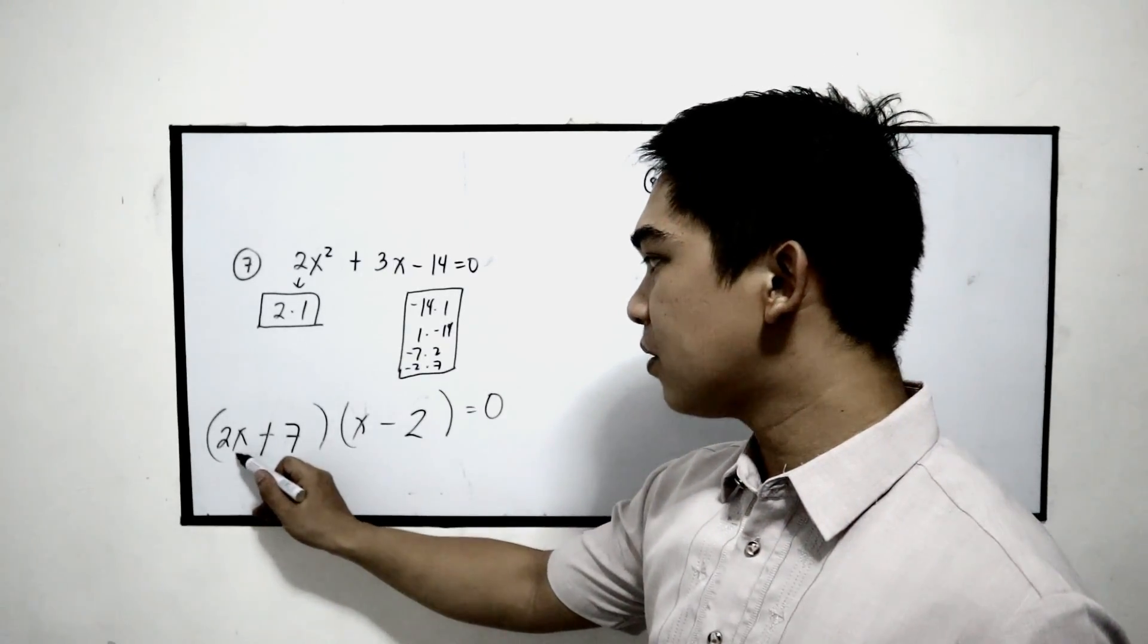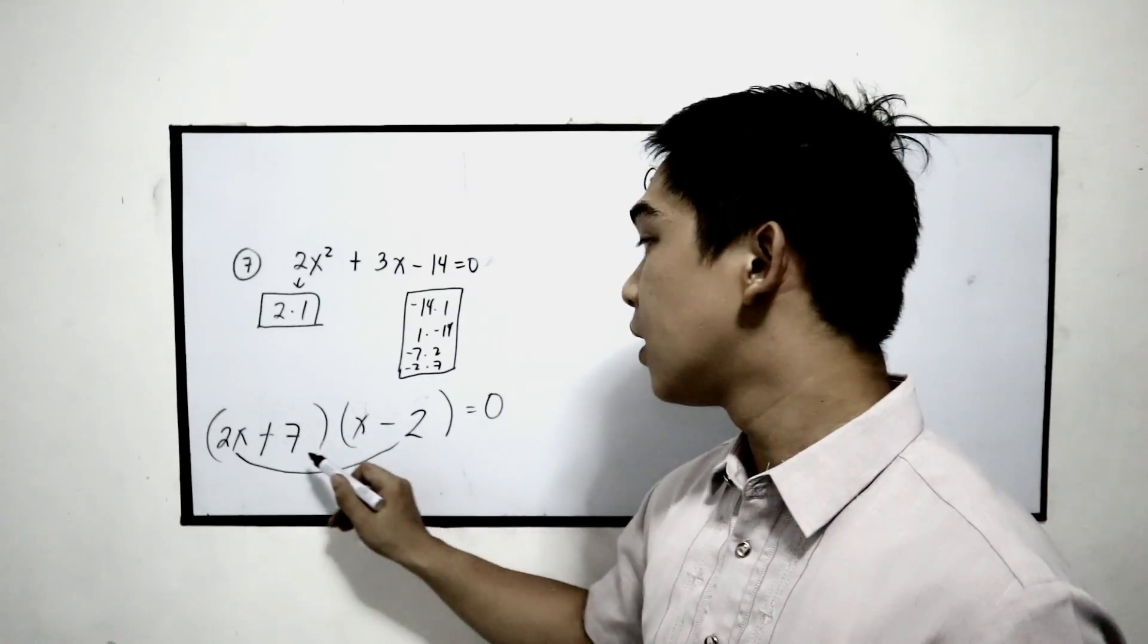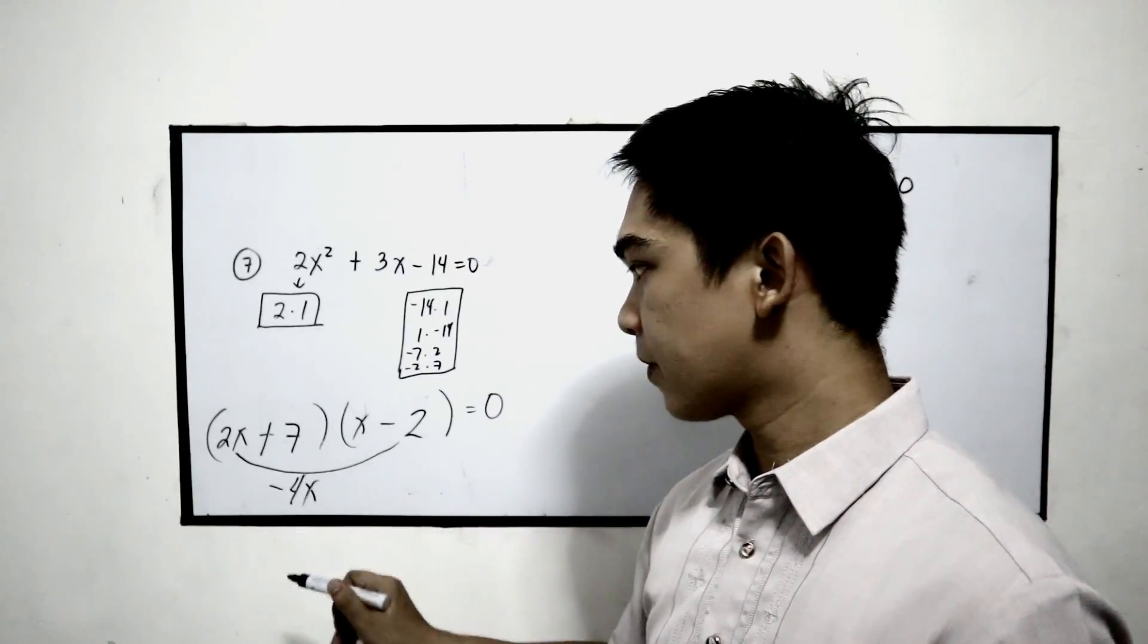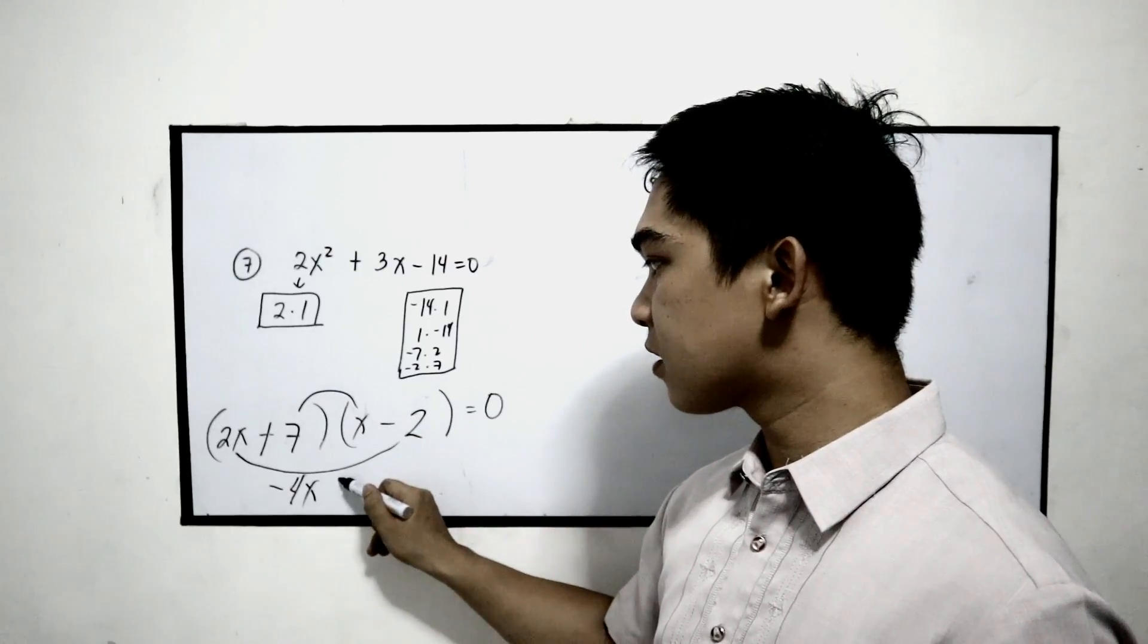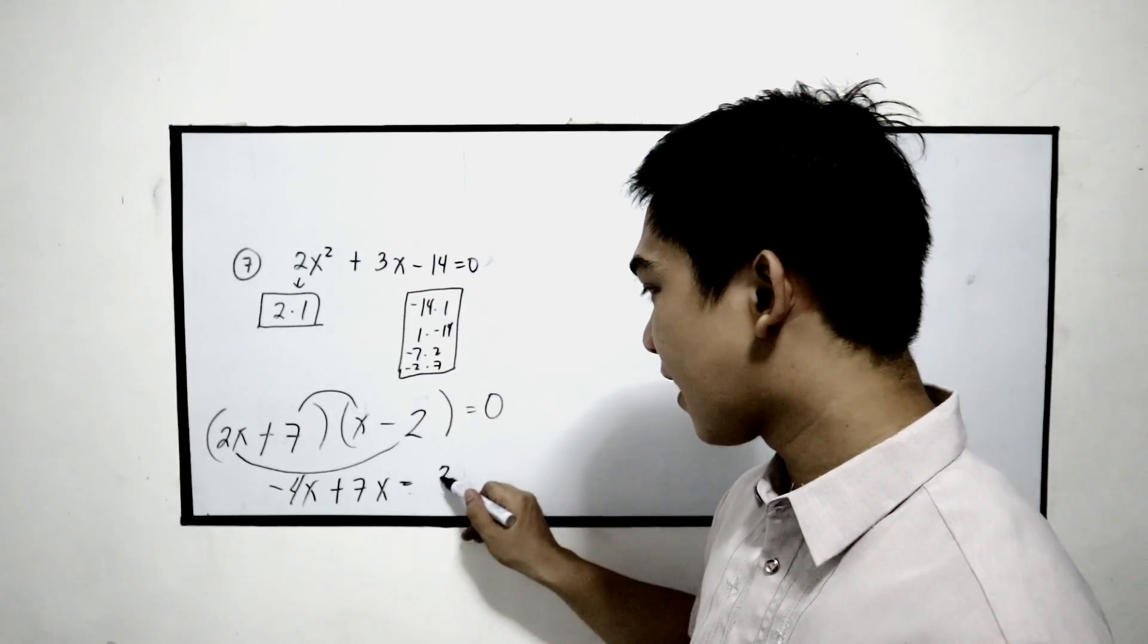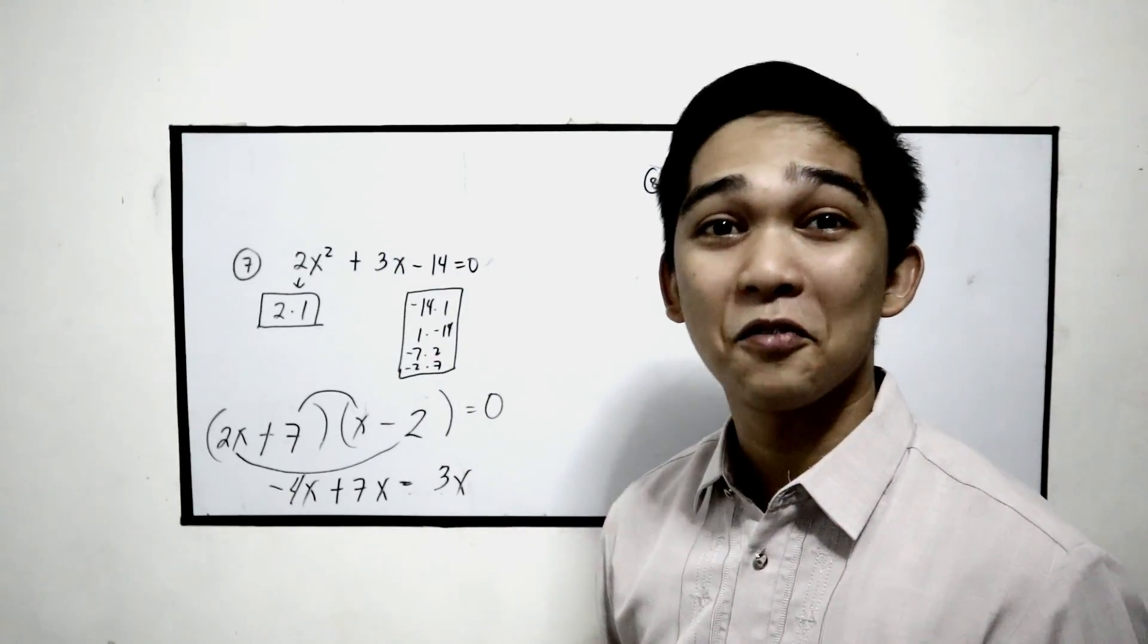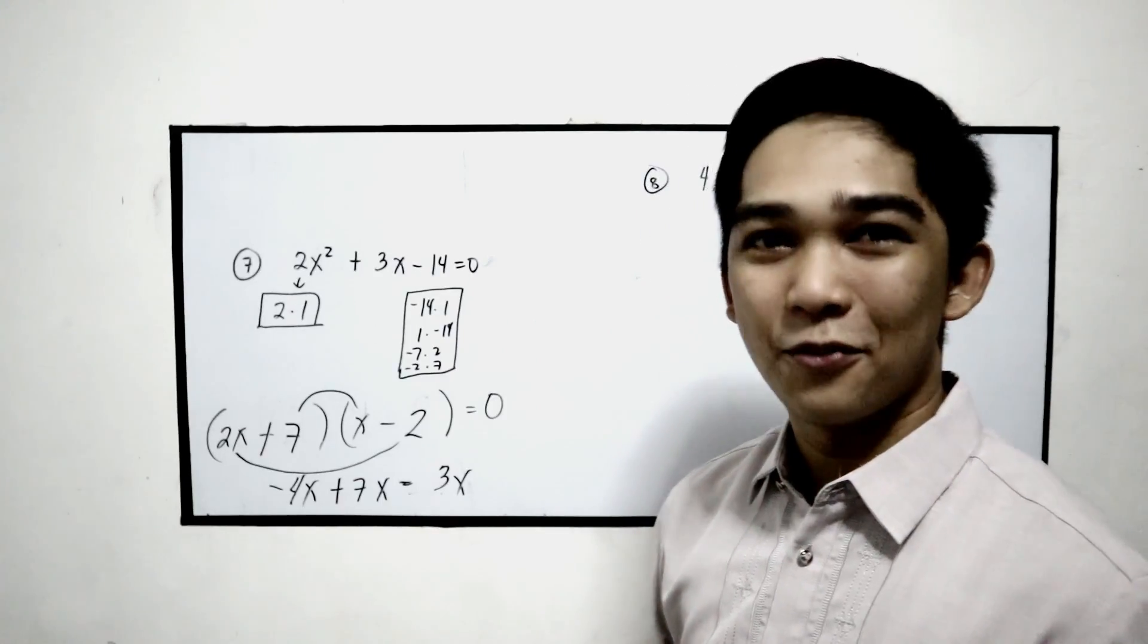Let us try now. Outer to outer, 2x times negative 2, negative 4x. 7 times x, positive 7x. Add, that is 3x. They are now the same. That means our factors are correct now. Finally.